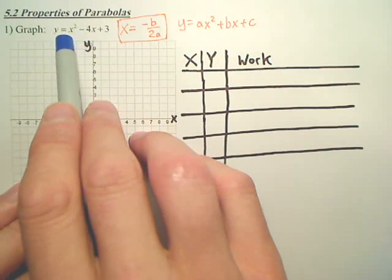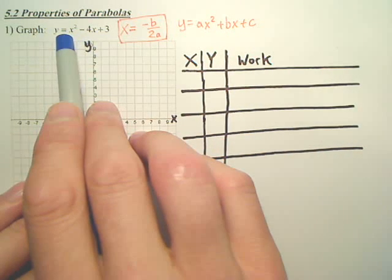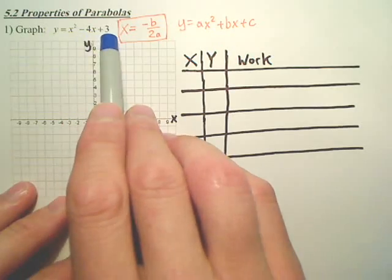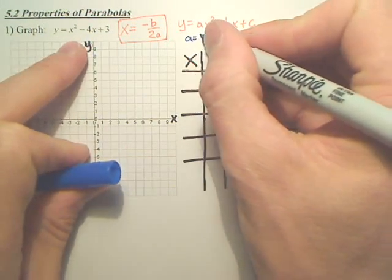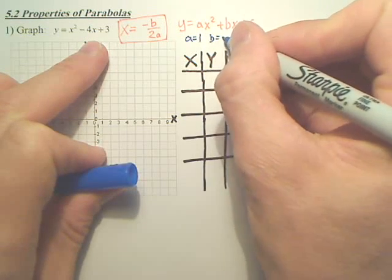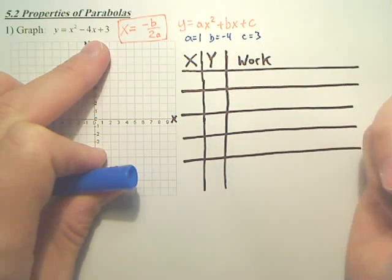So if you look at this, a is 1, because there's 1x squared. b is negative 4, c is 3. In this particular problem, a is 1, b is negative 4, c is 3.